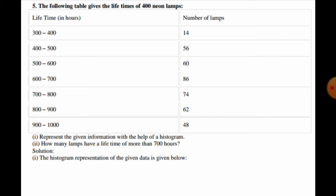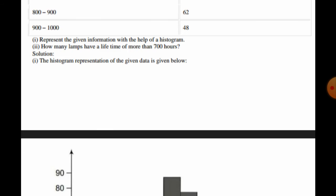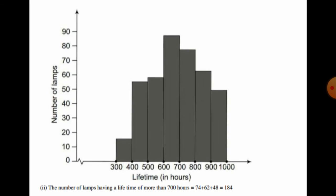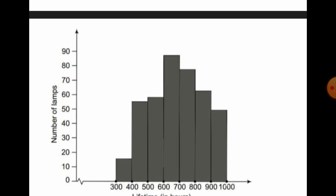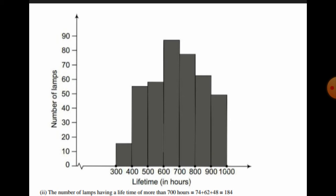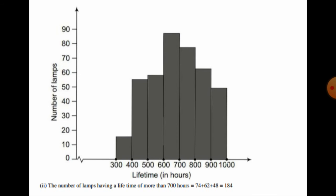In the first case, we represent the information with the help of a histogram. On the x-axis we take the lifetime from 300 to 1000, and on the y-axis we represent the number of lamps. In this way we can represent the histogram for the given data.